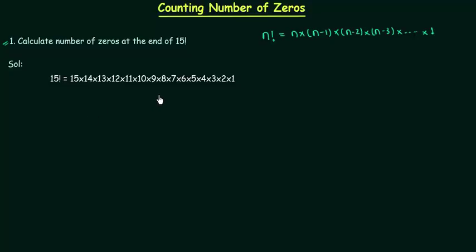Now we have to concentrate on 5. Why we are concentrating on 5? Because 5 multiplied by any even number gives us 0 and we are looking for number of zeros at the end of 15 factorial. So we have to concentrate on 5.